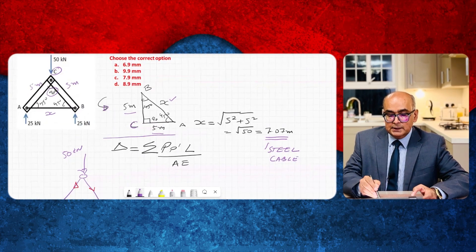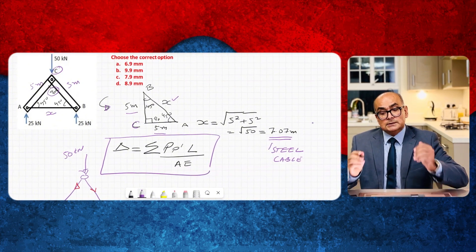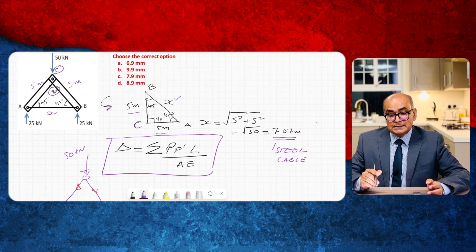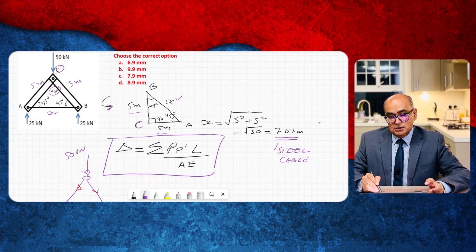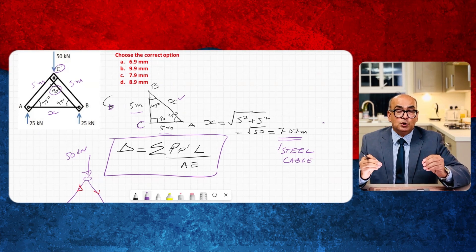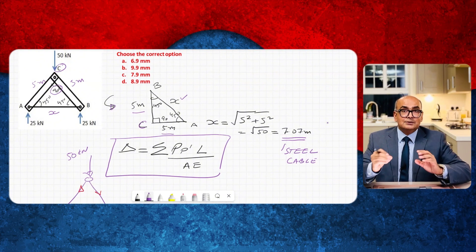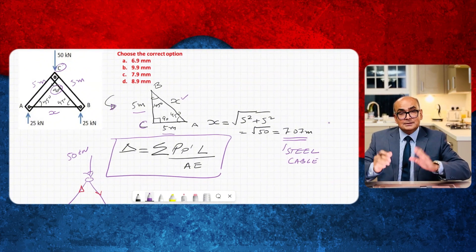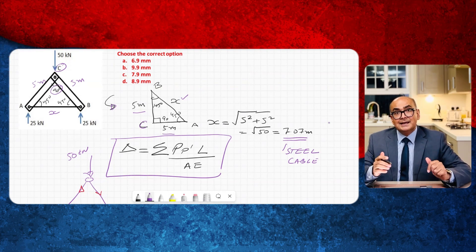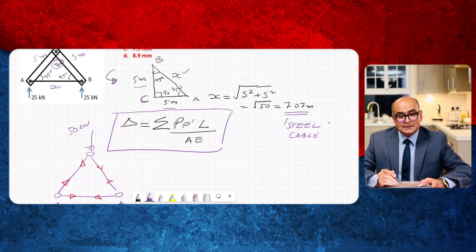Once I have done this then I will find the deflection using this formula which is summation of actual load times summation of virtual load L divided by A is area E is Young's modulus. This is what we call as virtual work method. I have a complete lecture on virtual work method. I teach level two students at University of East London. This is structural analysis. I have a complete lecture but I will record this lecture again. Let's move on to the example.